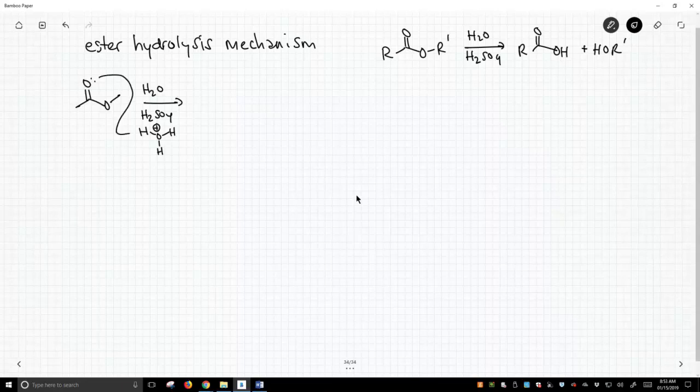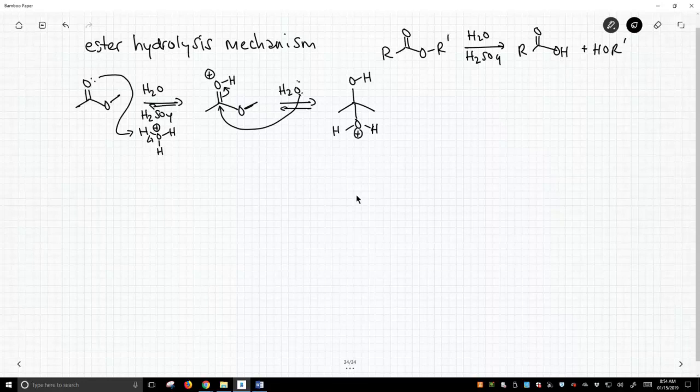We start by protonating the carbonyl and that gives us a protonated carbonyl. That's a nice strong electrophile now and our water, although it's just a weak nucleophile, can attack that carbonyl. That gets us to here. Note that all these steps are equilibria, so we ought to keep equilibrium arrows going here.